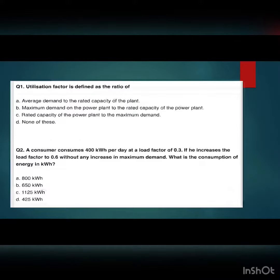Next, utilization factor is defined as the ratio of: Option A - average demand to the rated capacity of plant. Option B - maximum demand on the power plant to the rated capacity of the power plant. Option C - rated capacity of the power plant to the maximum demand. Option D - none of these.